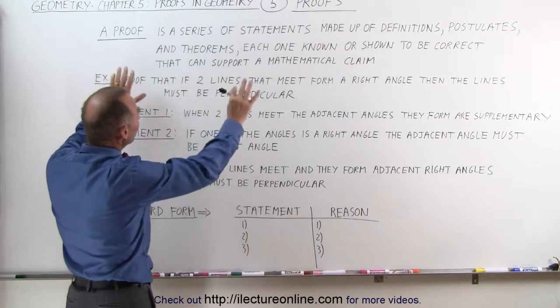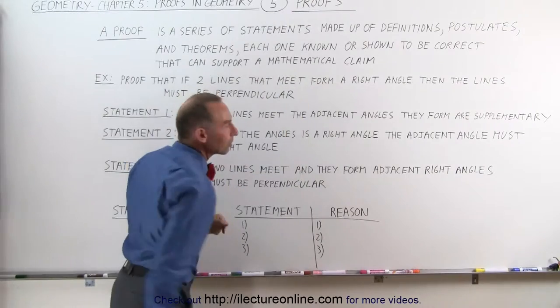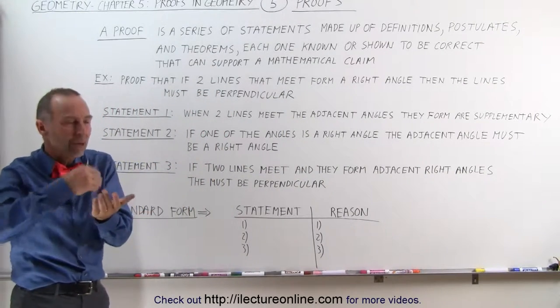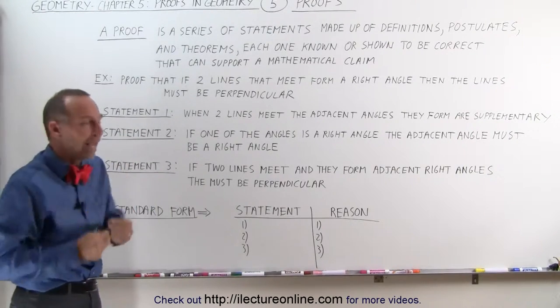When we put those statements together, together as a string, they can support a mathematical claim. And that's basically what we're doing. When we prove something, we come up with support for that mathematical claim. And once we do that, we've proven that.